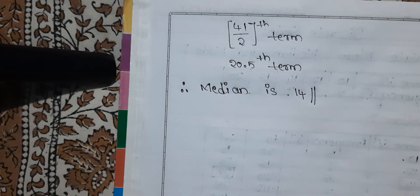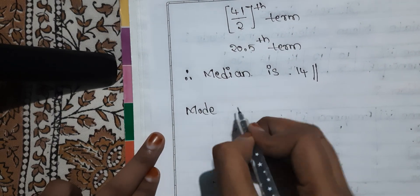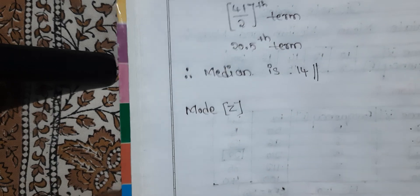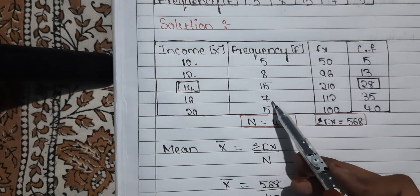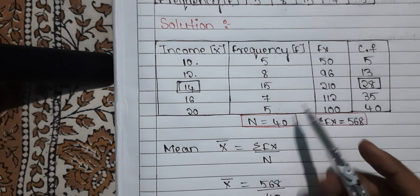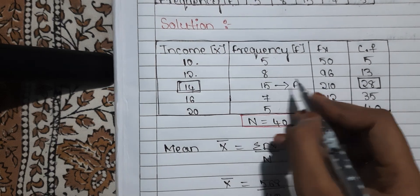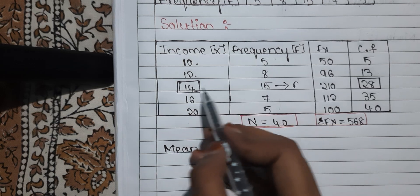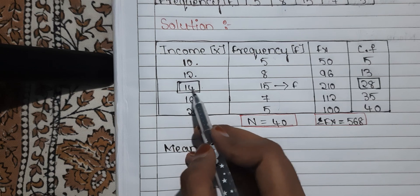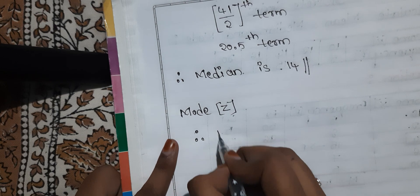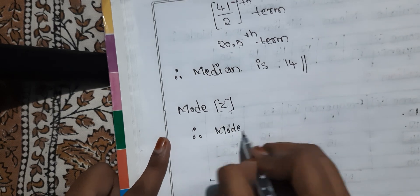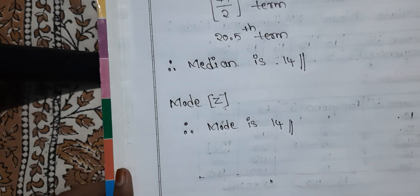Now let us go with mode. Mode is also known as Z. Mode is nothing but the highest frequency. Looking at the frequencies — 5, 8, 15, 7, 5 — the highest frequency is 15. The X value corresponding to this frequency is 14. So 14 is our mode. Therefore, mode is 14.